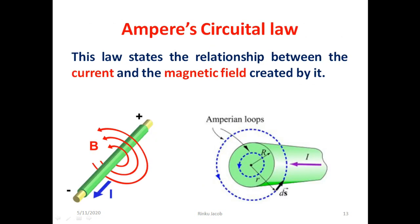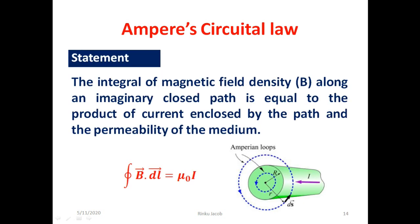Next we discuss about Ampere's circuital law. This law states the relationship between the electric current produced by the flow of charges and the magnetic field created by the flow of current. The law states that the integral of magnetic field density B along an imaginary closed path or loop is equal to the product of the current enclosed by the path and the permeability of the medium. It is mathematically written as the line integral over a closed path of B dot dL equal to mu zero times I, where I is the enclosed current. This path is called the Amperian loop.